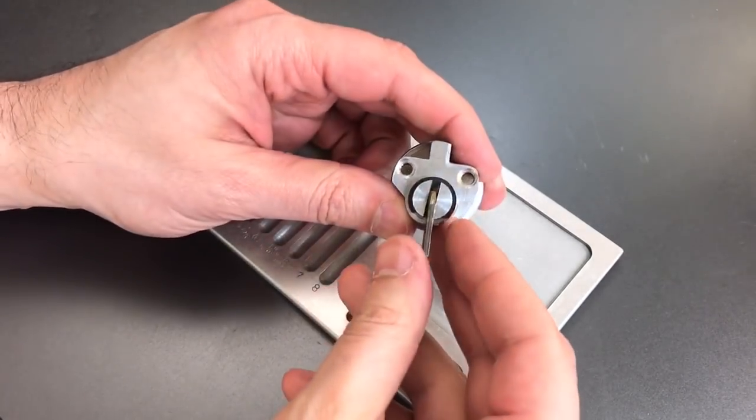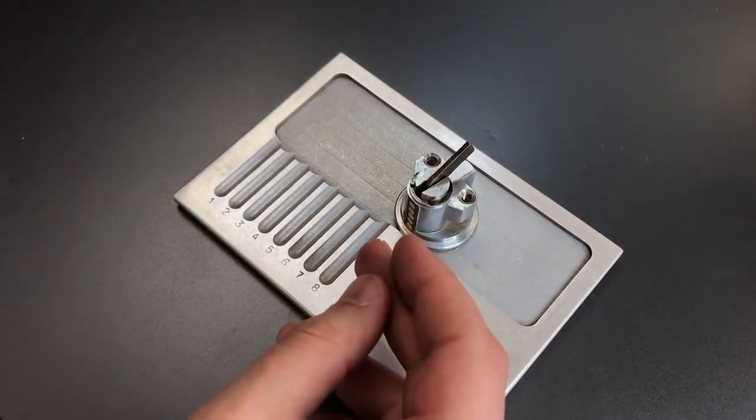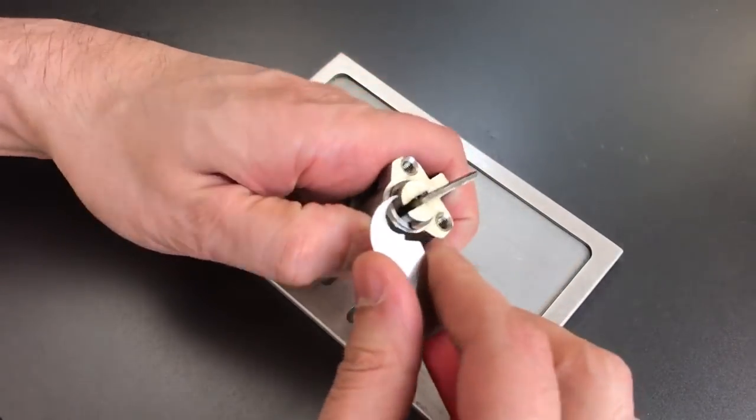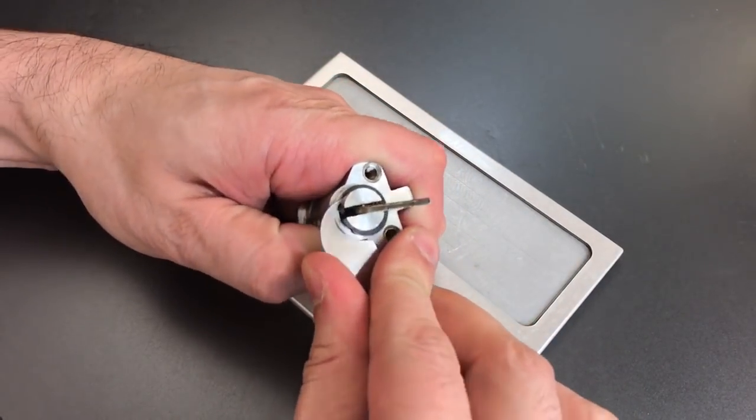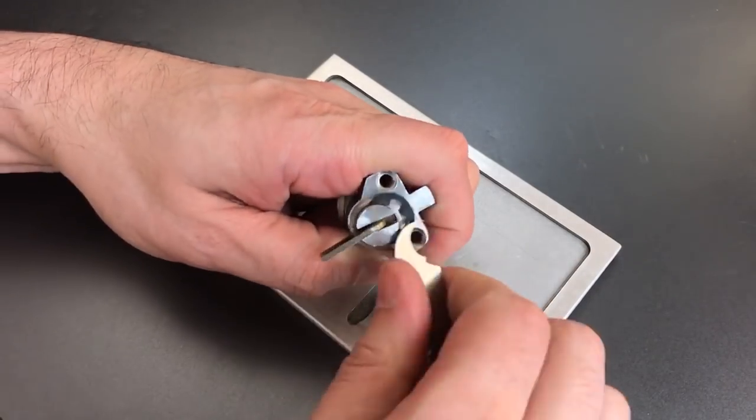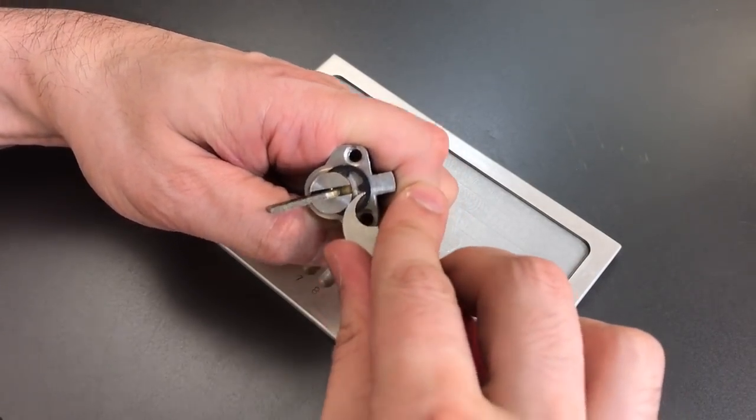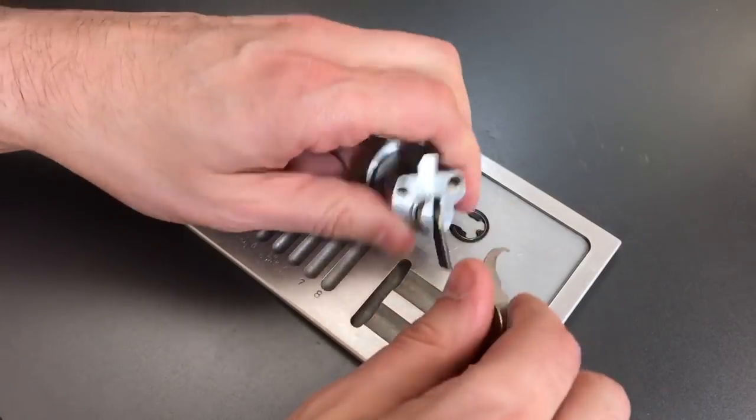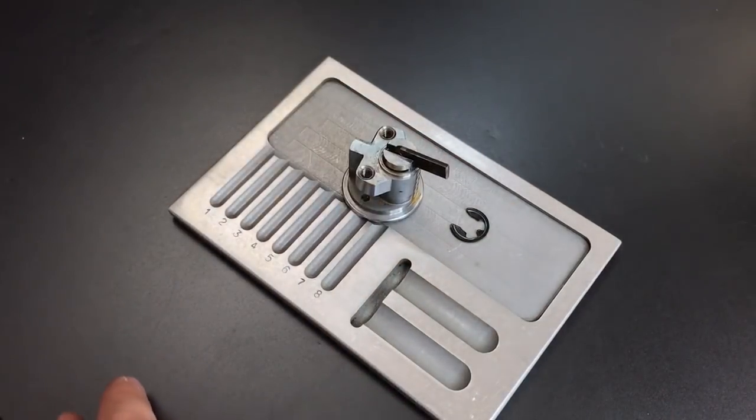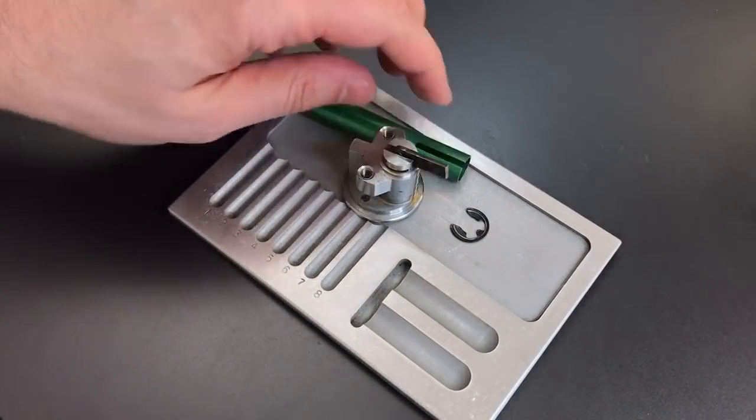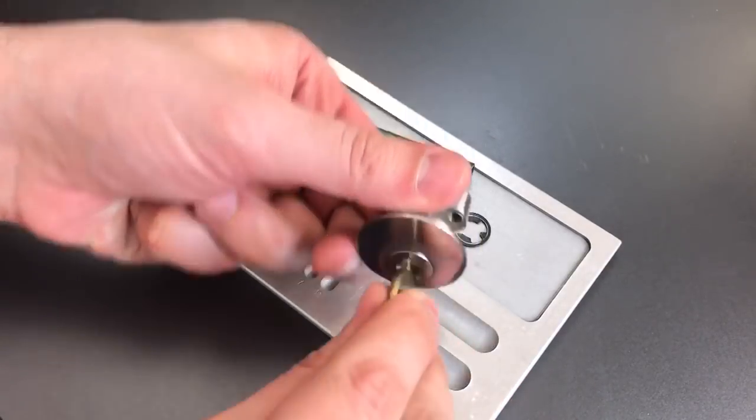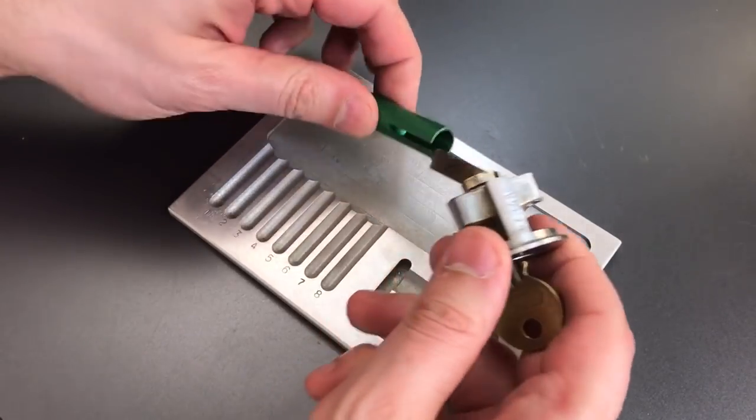Looks like we've got a C-clip on the back. Got that off. Now, let's get the key and a follower. Hopefully, we'll open this up easily.